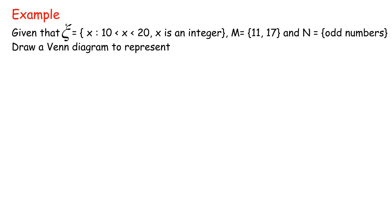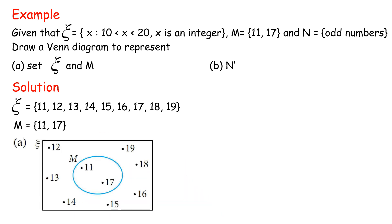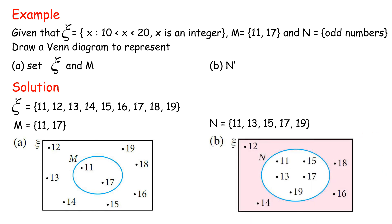Example: given that Universal Set = {x | 10 < x < 20, x is an integer}, M = {11, 17}, and N = {odd numbers in the Universal Set}, draw a Venn diagram to represent A: Universal Set and M, and B: Universal Set and N. Solution: Universal Set = {11, 12, 13, 14, 15, 16, 17, 18, 19}. A: M = {11, 17}. B: N = {odd numbers} = {11, 13, 15, 17, 19}.